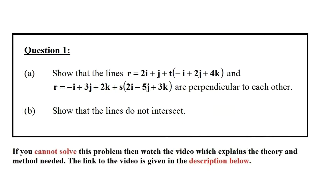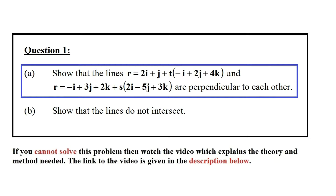Hi there. In this video I'm going to do a revision question on vectors. So let's take a look at this question. Question number one, part A: show that the lines r = 2i + j + t(-i + 2j + 4k) and r = -i + 3j + 2k + s(2i - 5j + 3k) are perpendicular to each other.